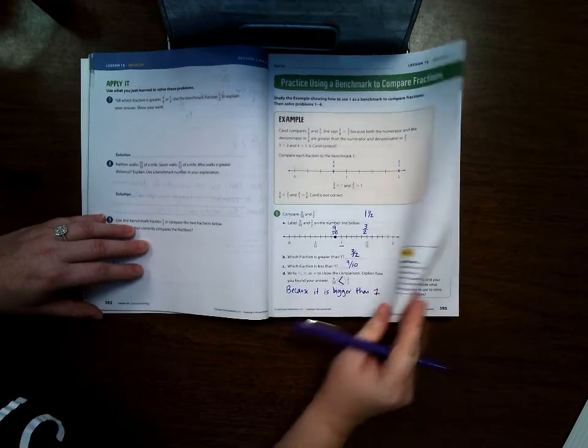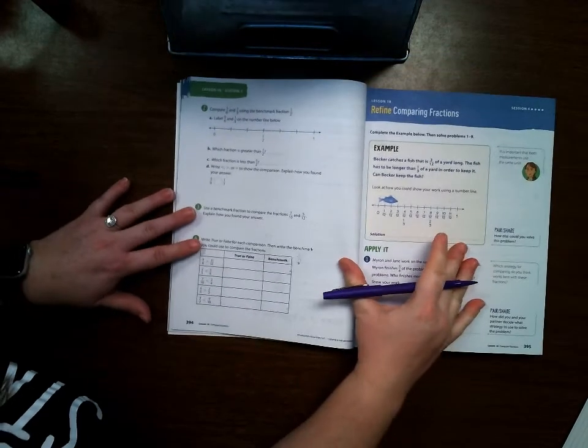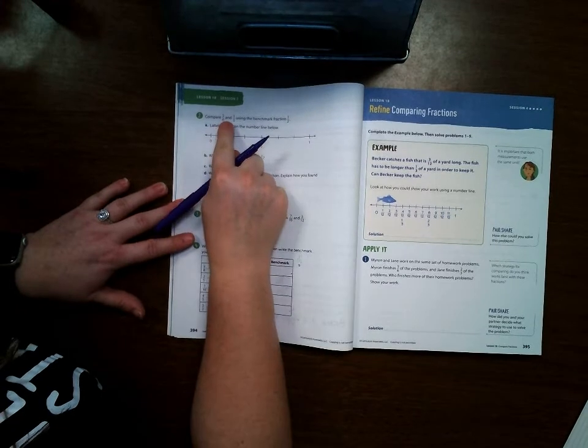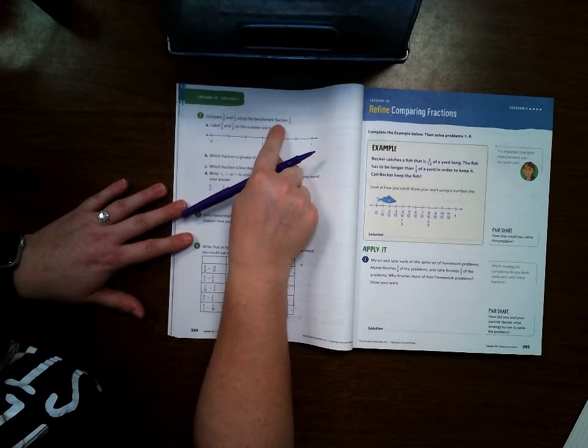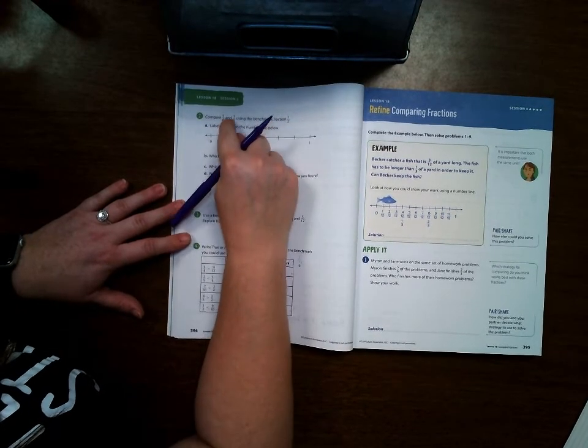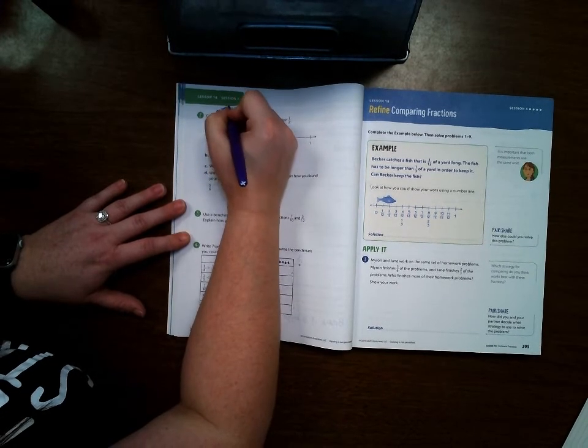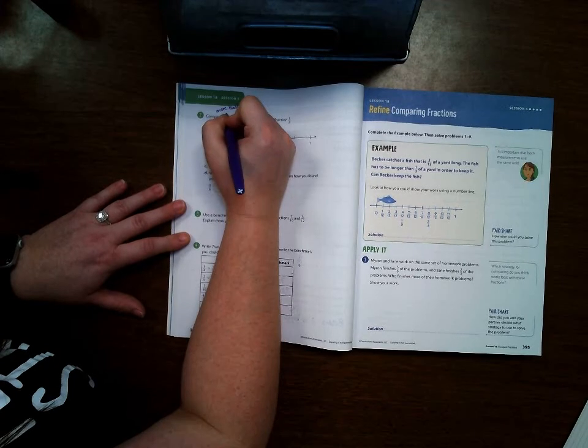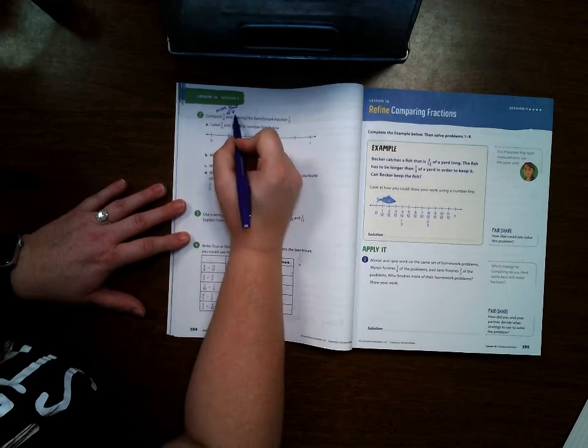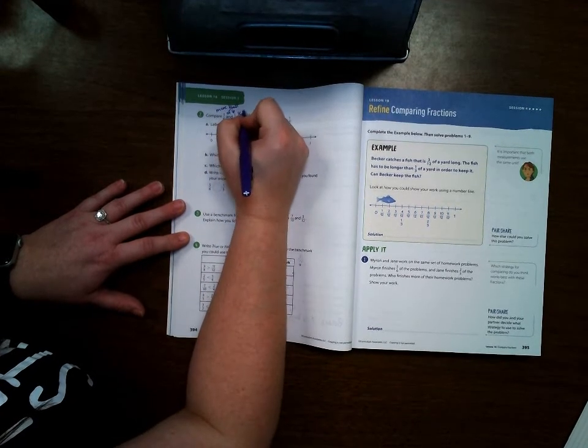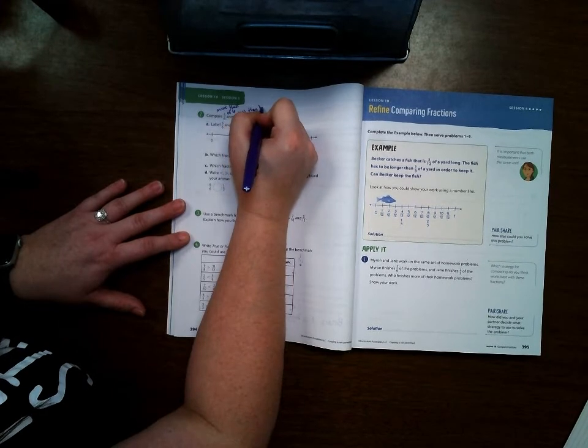Okay, let's go ahead and take a look at 394. Compare five-sixths and one-third using benchmark fraction one-half. Well, five-sixths, five is more than halfway of 6. But one-third is less than half of 3.